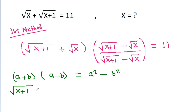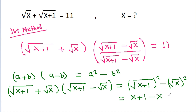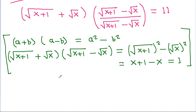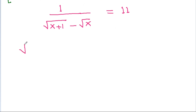So a square root of x plus 1 plus a square root of x, times a square root of x plus 1 minus a square root of x, gives us a square root of x plus 1 squared minus a square root of x squared, which simplifies so that a square root of x plus 1 minus a square root of x is equal to 1 divided by the given value.